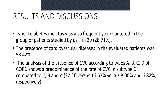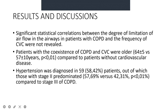Type 2 diabetes mellitus was also frequently encountered in the group of patients studied. The presence of cardiovascular disease was evaluated in 58% of patients. The analysis of cardiovascular comorbidity according to COPD type A, B, C, D showed a predominance of cardiovascular comorbidity in type D compared to C, B, and A. Significant statistical correlations between the degree of airflow limitation in patients with COPD and the frequency of cardiovascular comorbidities were not relevant.